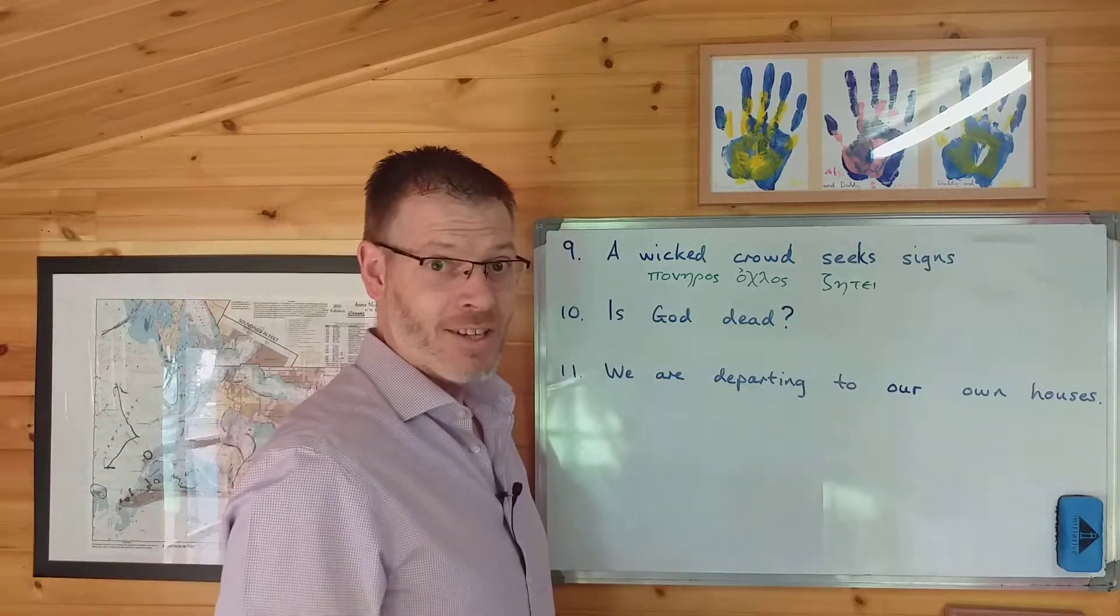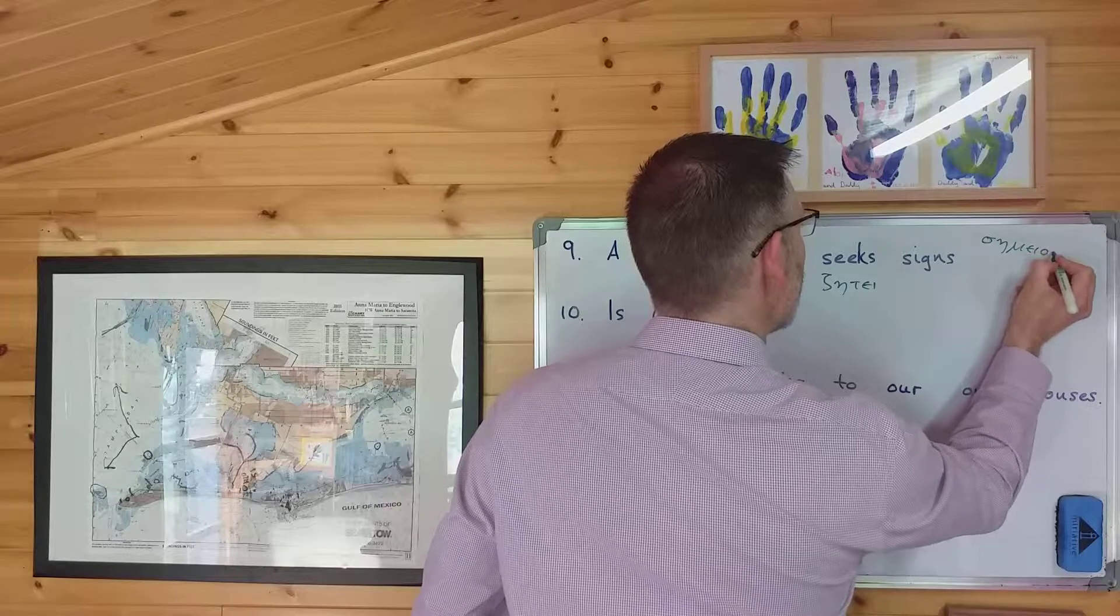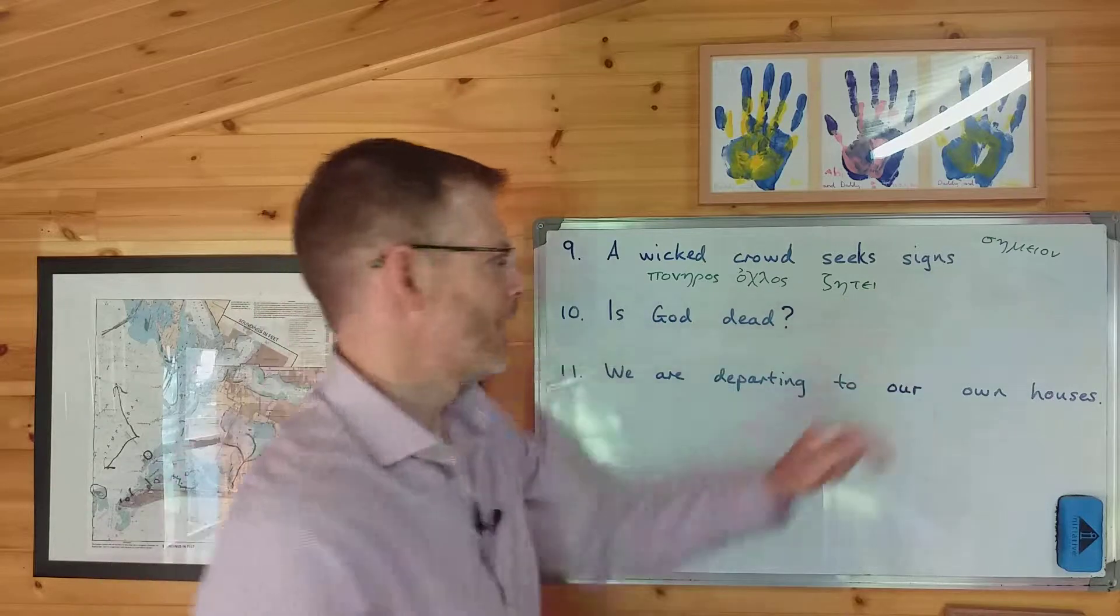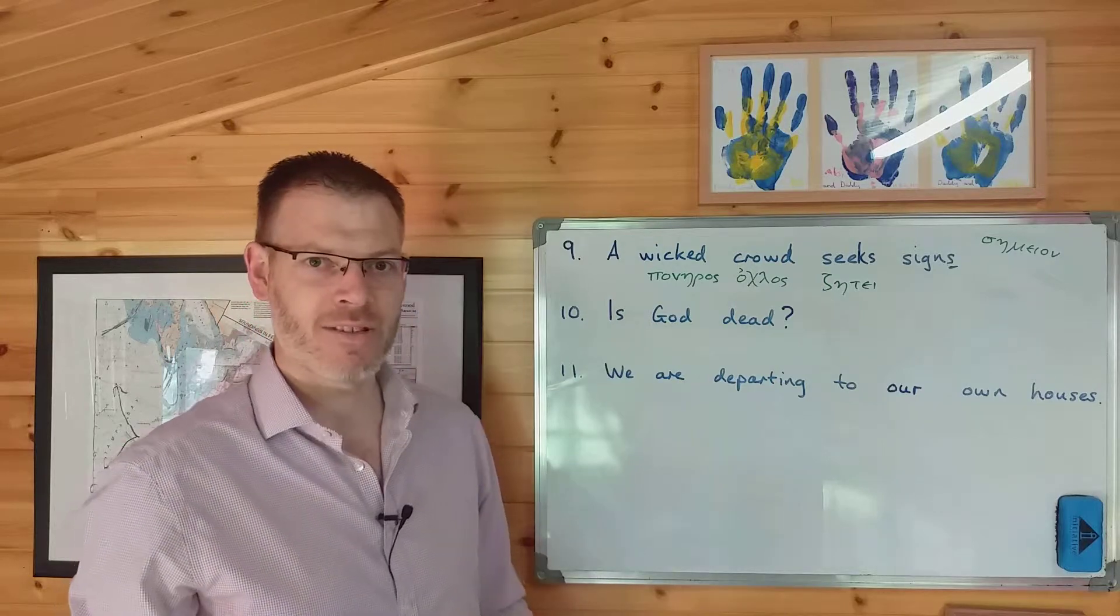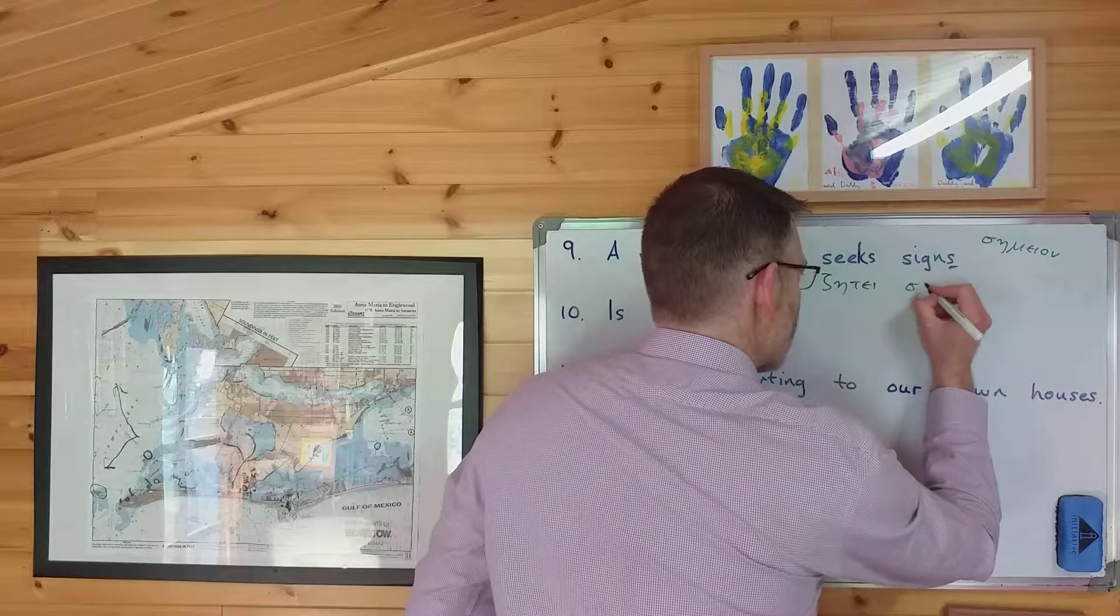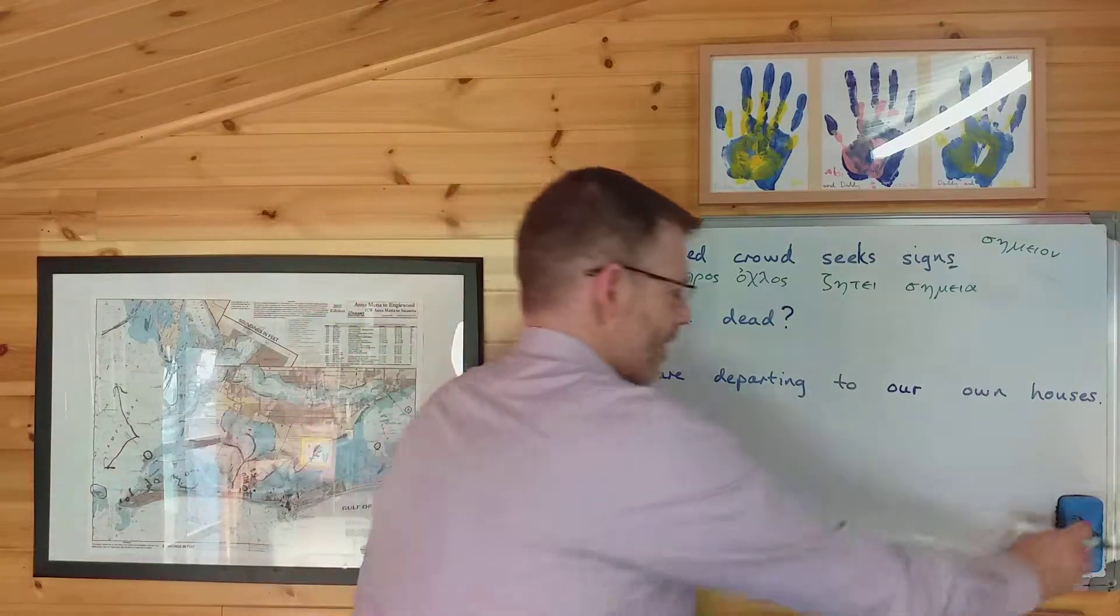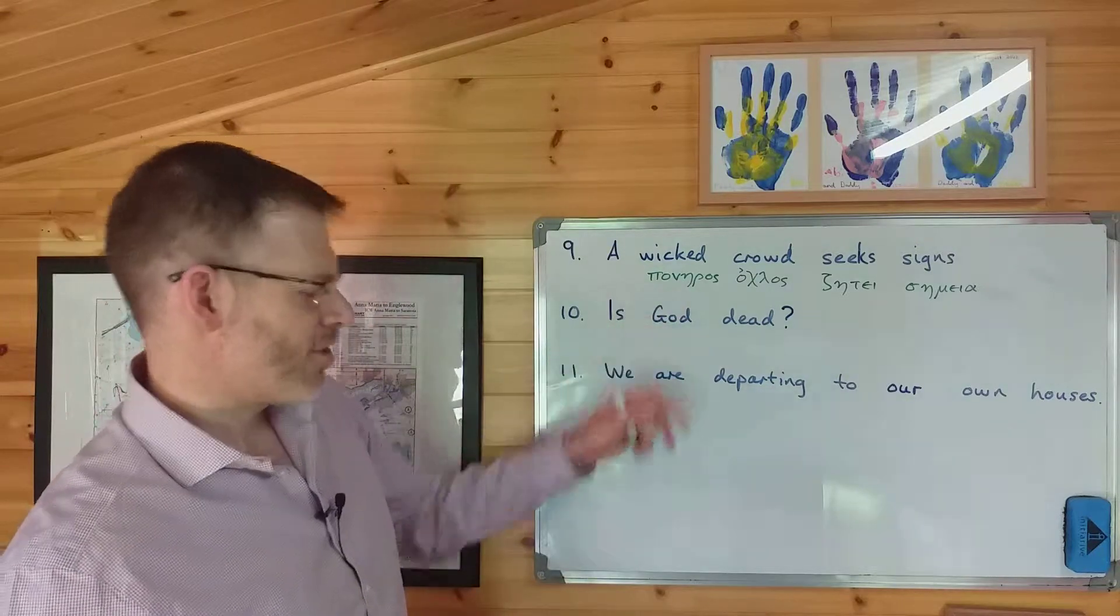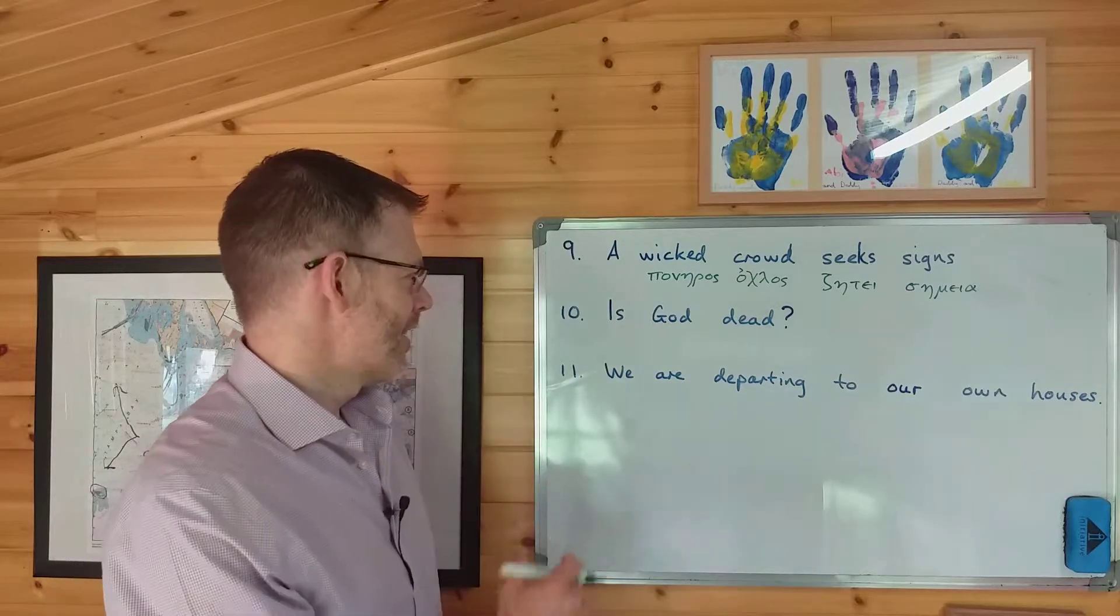Incidentally, if you need a mnemonic to remember that poneros is wicked, then I think there's something wrong with you. The name enough is enough, surely. The word poneros just sounds wicked or evil, doesn't it? Okay, a wicked crowd seeks, and then we want signs. The word for a sign in Greek is semeon. It's a neuter noun, but we want a neuter plural noun, and it wants to be in the accusative case, because it's the object of the verb. So semeon, semeon, semeiu, semeo, semea, semea, semea, accusative plural. Remember, of course, that the nominative and the accusative are the same in neuter nouns. So there we are. Poneros ochlos zete semea. A wicked crowd seeks signs. That's number nine.